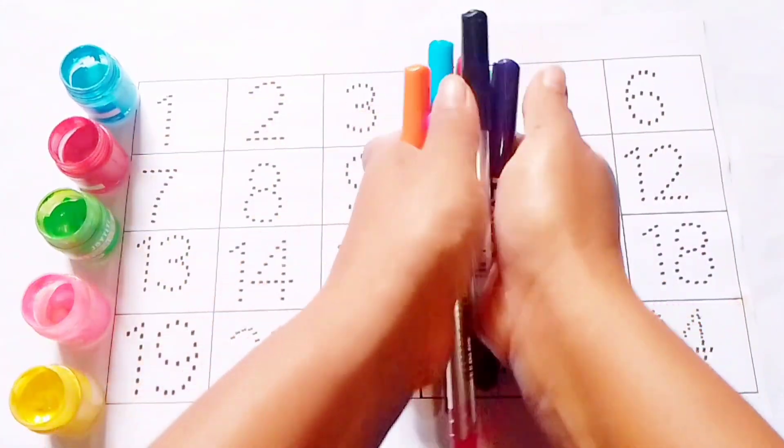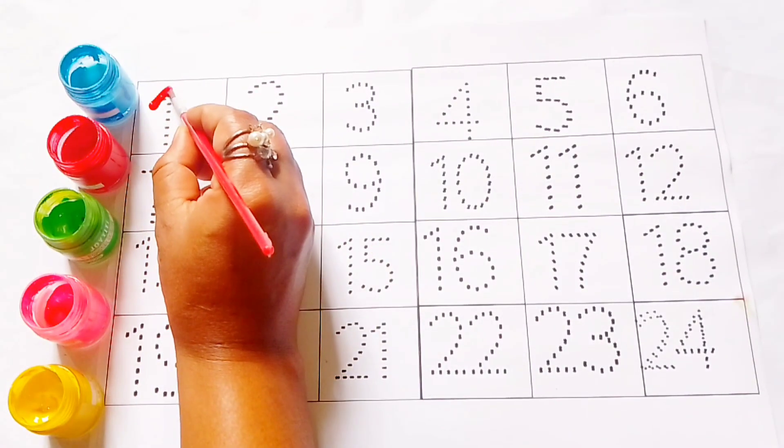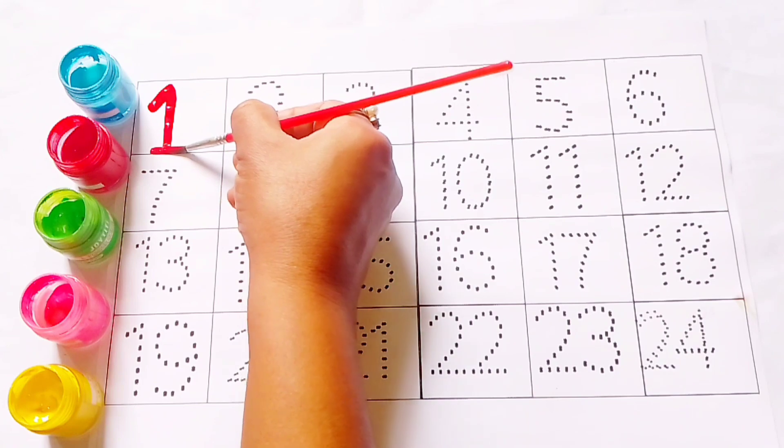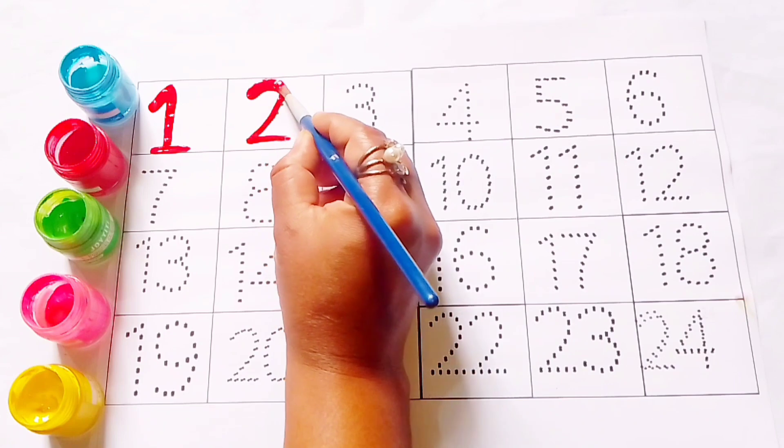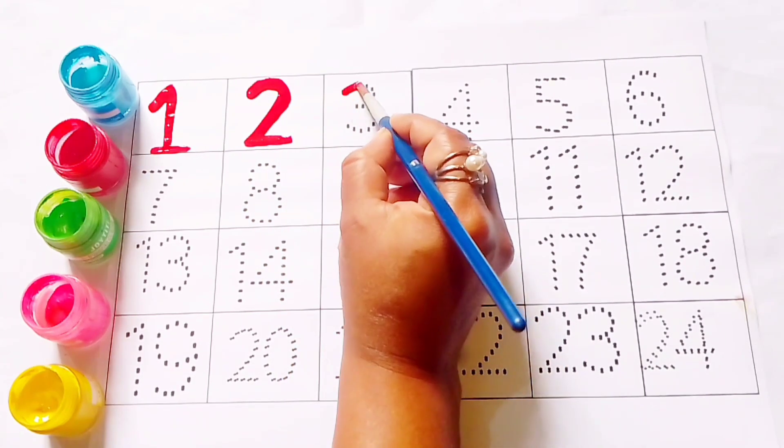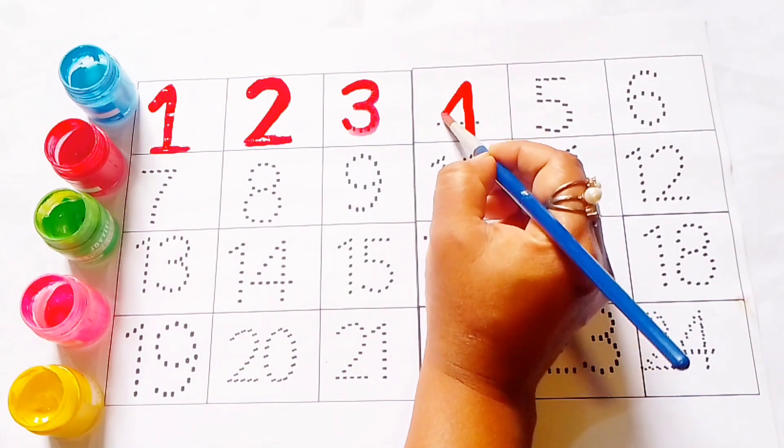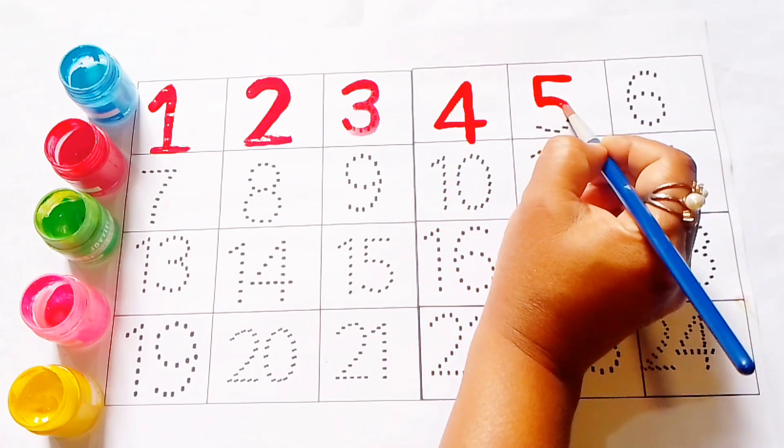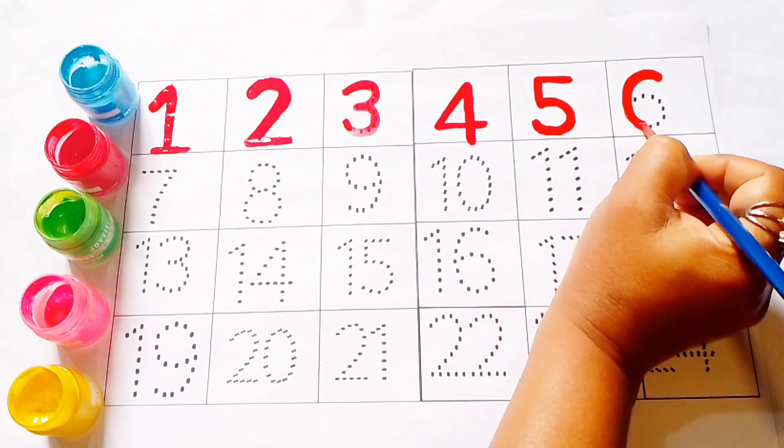Counting numbers. Red color. 1, number 1. 2, number 2. 3, number 3. 4, 5, 6.